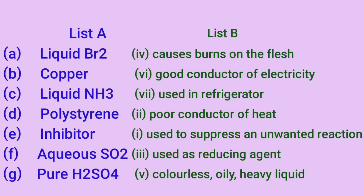Number A: Liquid bromine – the other causes bands on the flush. Number B: Copper – good conductor of electricity. Clear acid almost 4-9-9. Number C: Liquid NH3, liquid ammonia – Number 7, using refrigerator. Number D: Polystyrene – Number 2, poor conductor of heat. A pool can't be used to be plastic. Number E: Inhibitor – inhibitor is a negative catalyst.